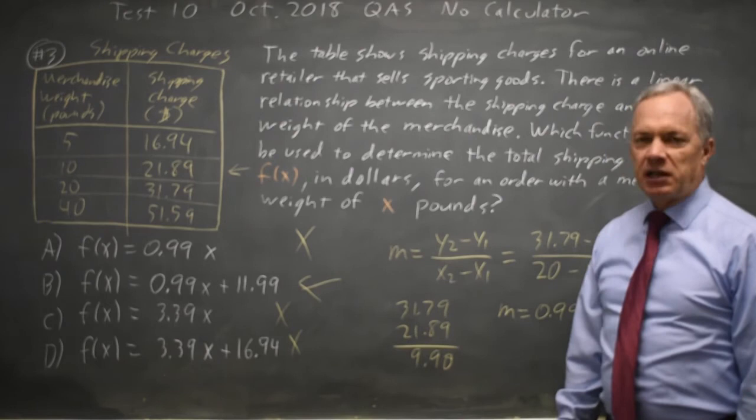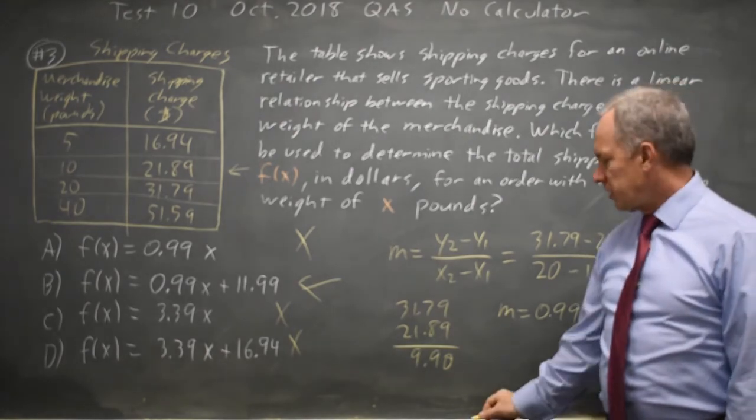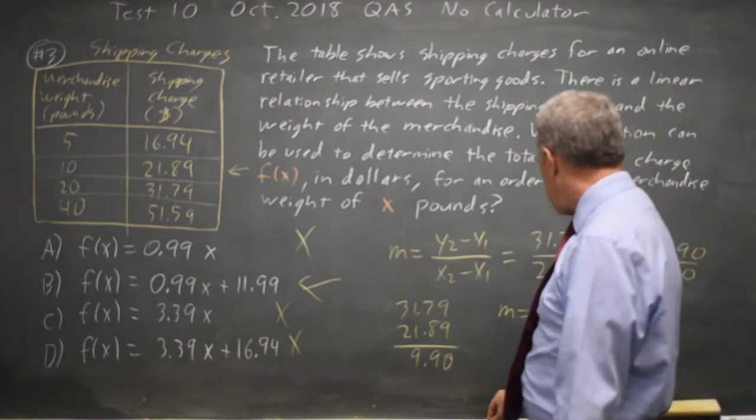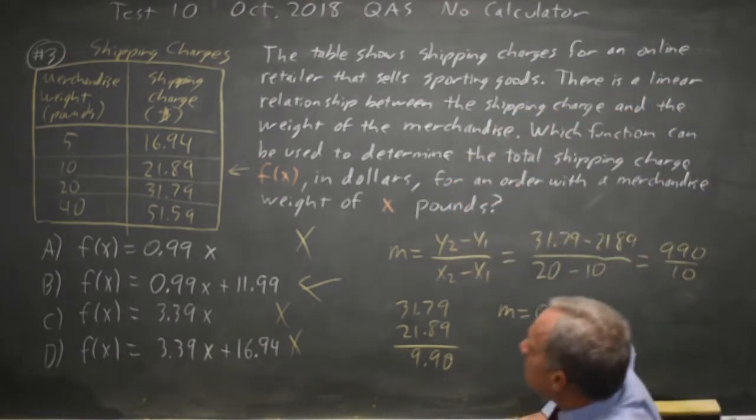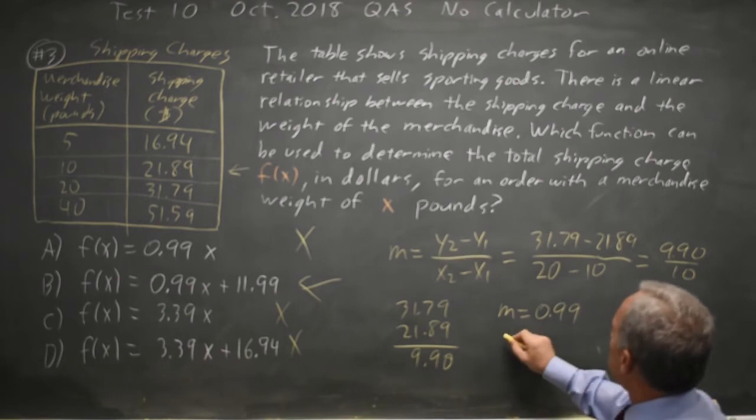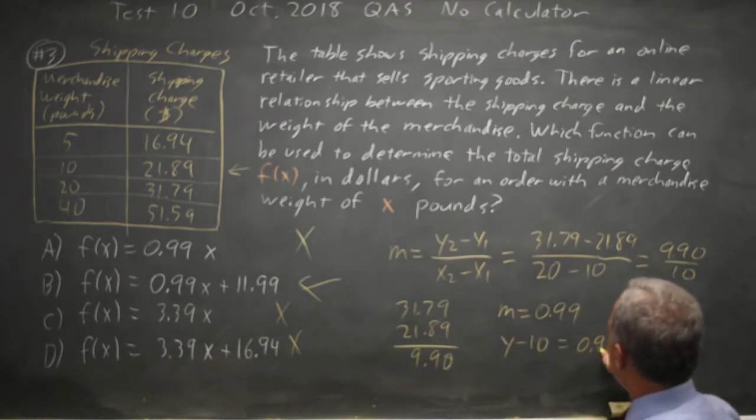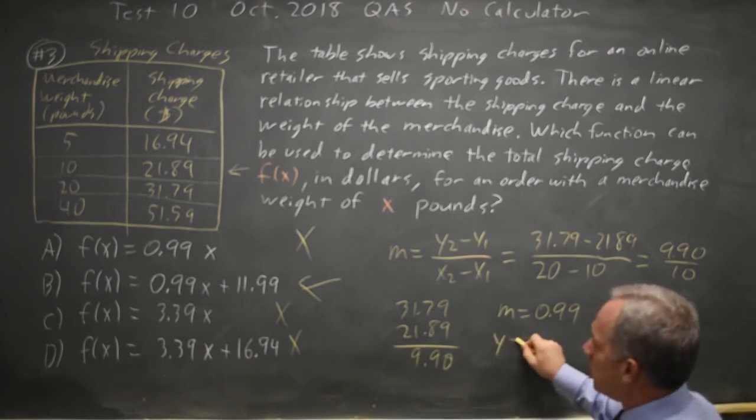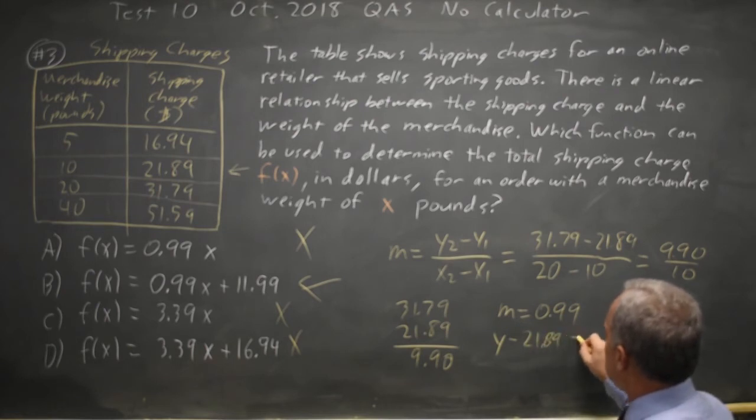At that point, I can substitute in any point and solve for the y-intercept if I wanted to write the equation from scratch, which is what you might do if this were a grid in. So let's do that. Y minus the y value, which is 21.89 equals the slope m, which is 99 cents. We found that.